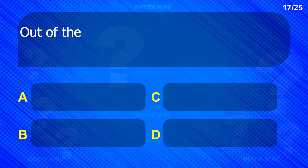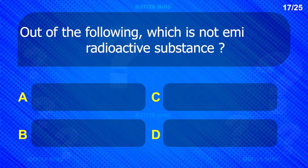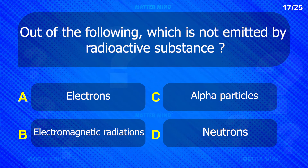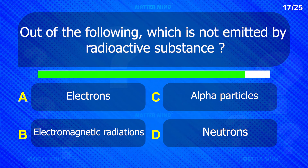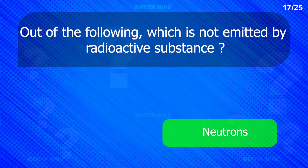Out of the following, which is not emitted by radioactive substances? Neutrons.